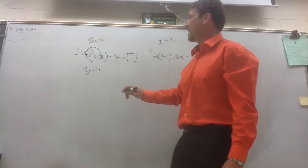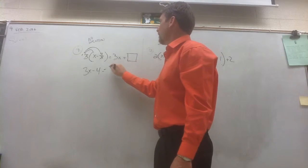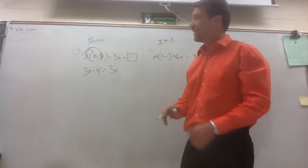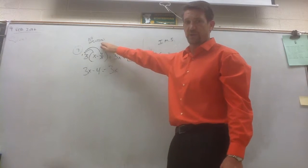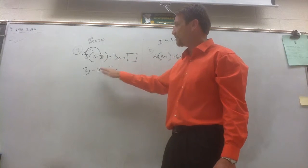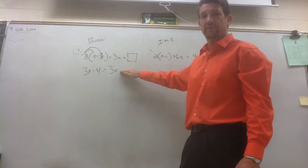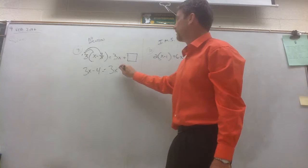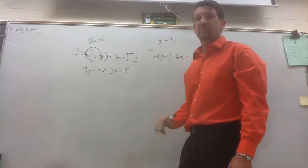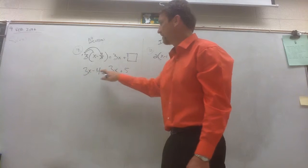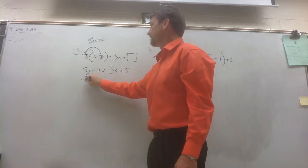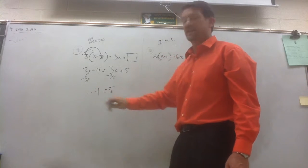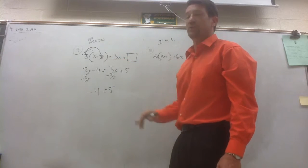Distributive property over on the left side. And we want this to equal 3x plus some other number. Well, think about it. For this equation to have no solution, the only number that we can't put right here would be a negative 4. So if you put any number besides a negative 4 into the box, this equation would now have no solution. If we subtracted the 3x's from both sides, we end up with negative 4 equals 5. That is not a true statement, so this equation would have no solution.